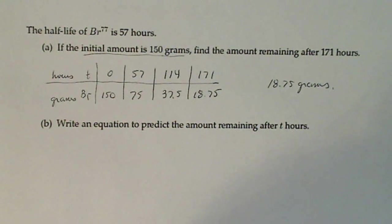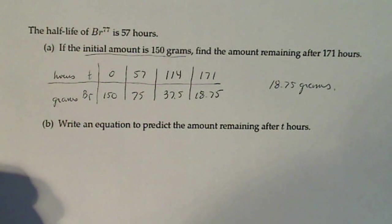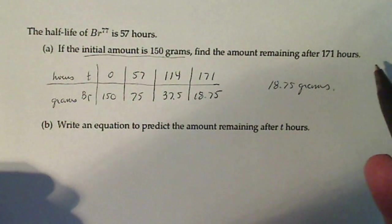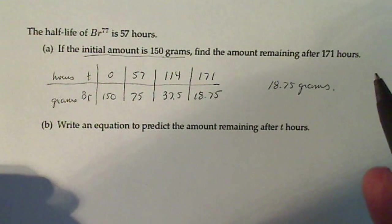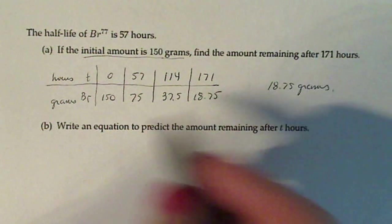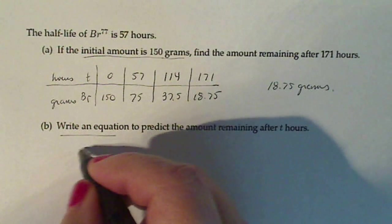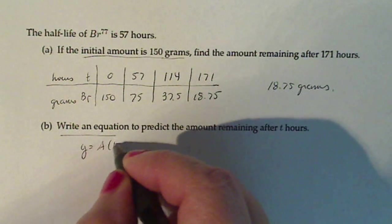Part B says write an equation to predict the amount remaining after t hours. So what if the number of hours we're working with isn't a fraction or partial of 57 like 171 is? So we need to write an equation. A generic equation of exponential is y equals AB to the t.